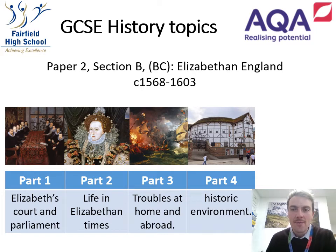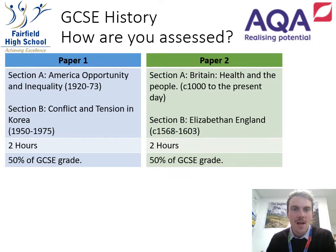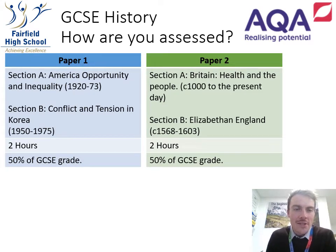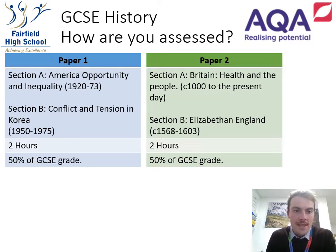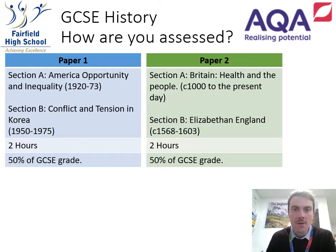We study a really broad variety of topics. How are you assessed? There are two papers, each assessed at the end of year 11 by purely exam — all of your assessment is done in exam. Paper one: two hours, worth 50 percent of your GCSE grade. Paper two: another two hours, also 50 percent of your GCSE grade. So it's all exam based — no coursework.